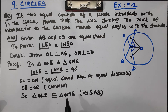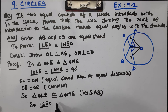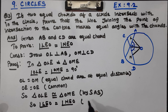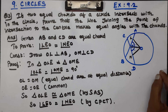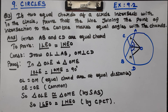So angle EOL equals angle MEO, by the congruent parts of congruent triangles. This is a very easy question for students.